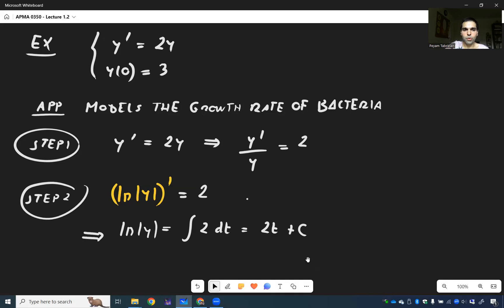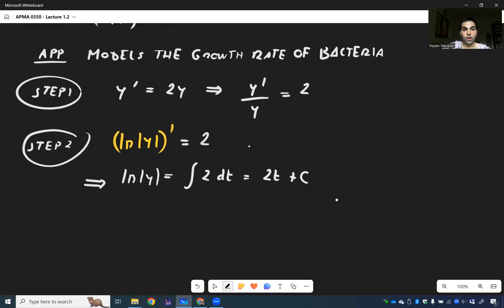And then we'll be able to solve for y. So, exponentiating, we get absolute value of y is e to the 2t plus c, which is the same thing as e to the c times e to the 2t. And then last but not least, we then get y is plus minus e to the c times e to the 2t.